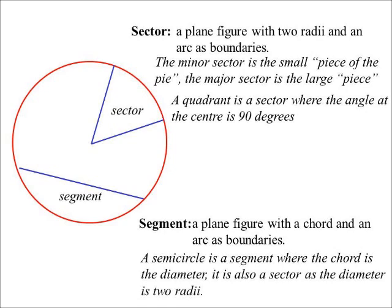The semicircle is a segment, but it's not minor or major because it's exactly half. We could also say the semicircle is a sector because it has two radii and a piece of the circumference.